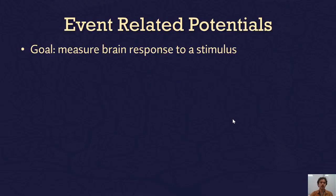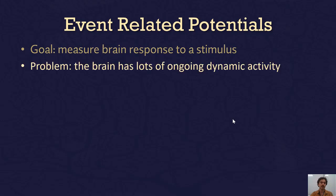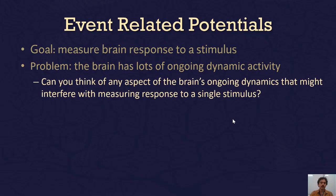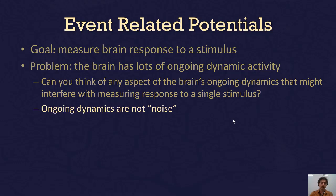Part one: how event-related potentials are measured. The goal of ERPs is to measure the brain's response to a particular stimulus. The problem is that the brain has lots of ongoing dynamic activity. These ongoing dynamics are not noise — they are really important aspects of the brain's overall state — but they might not be related to the particular stimulus that you're trying to measure the response to.